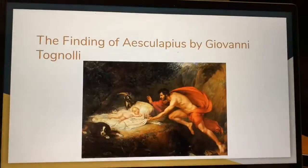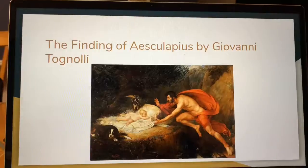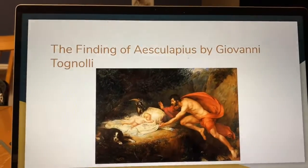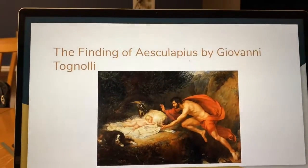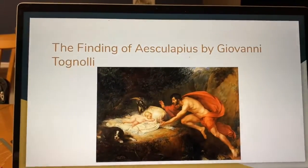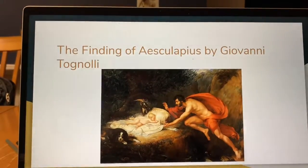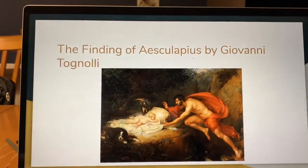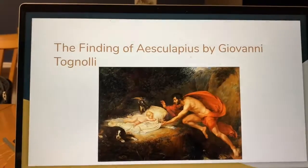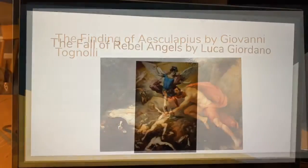The third artwork in my exhibit is The Finding of Esculapus by Giovanni Tognoli. It is an oil on canvas painting with unframed dimensions of 2960 centimeters by 1985 centimeters. It was created between 1822 and 1830.